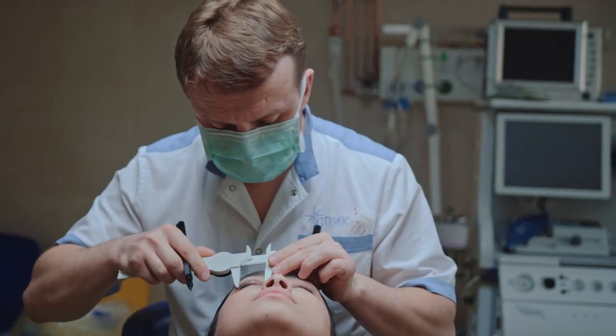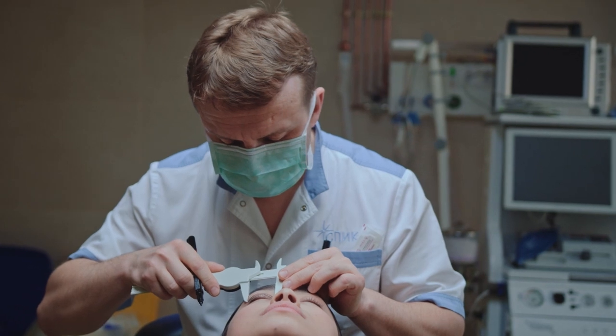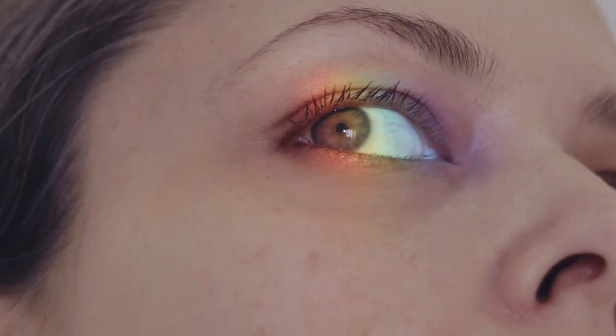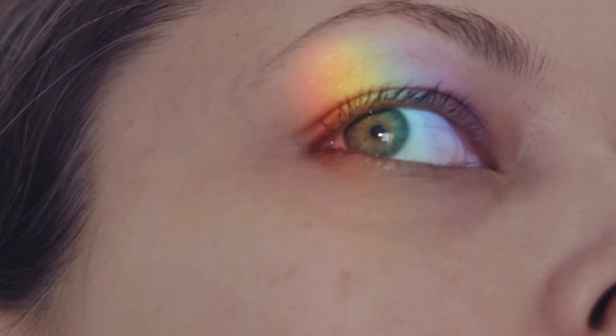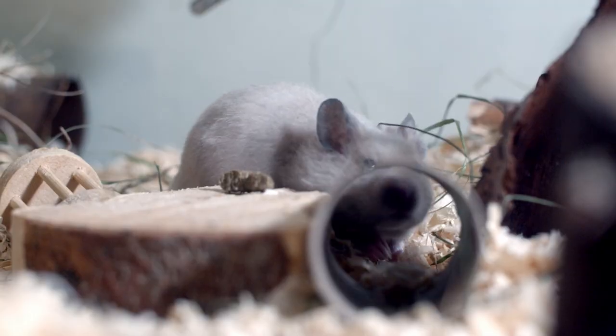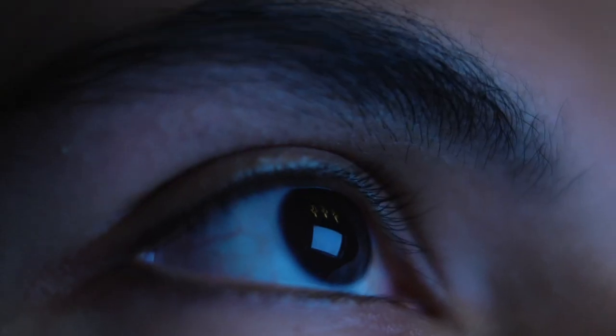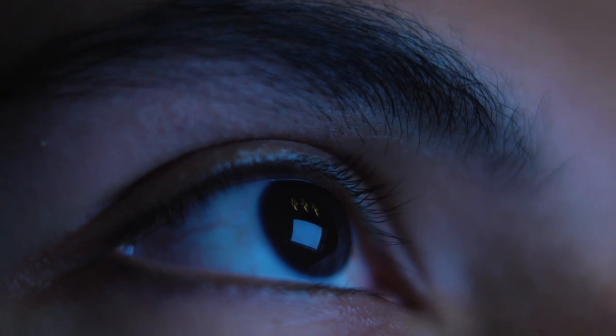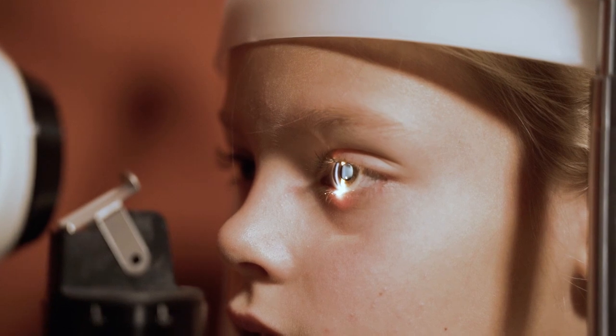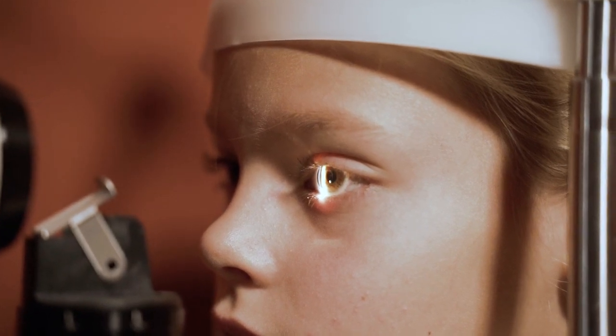Thanks to groundbreaking research into retinal implants, we may already possess the technology to make it a reality. Scientists have developed a retinal implant that functions similarly to a real retina and have successfully tested it in rats. While existing eye implants cannot repair retinal damage, the new technology offers hope by replacing damaged retina and photoreceptor cells.